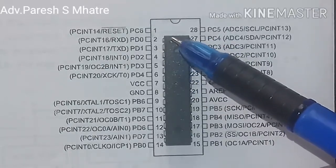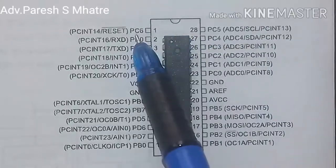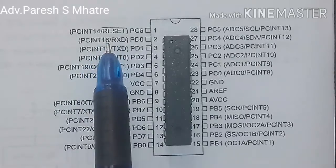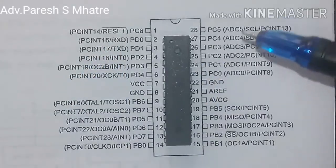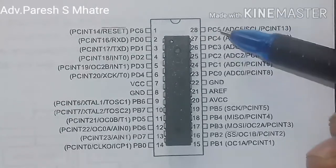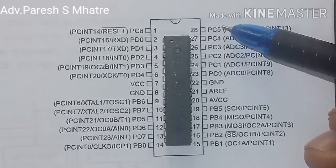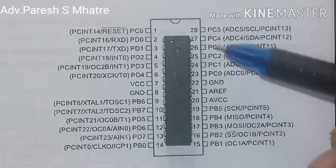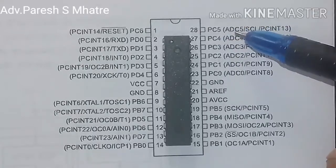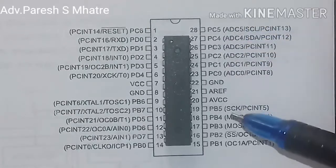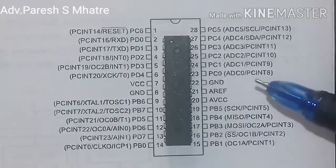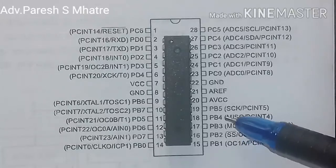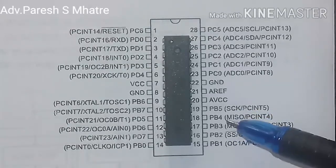This is Port C pin number 6, and also pin number 1 of the AVR. It has 7 pins total: Port C 0 to Port C 6. Port C pin number 5 to 2 we are using for our cathode pins. As you already know, Port B — Port B 0, pin number 14, 15, 16, 17, 18 — are being used.